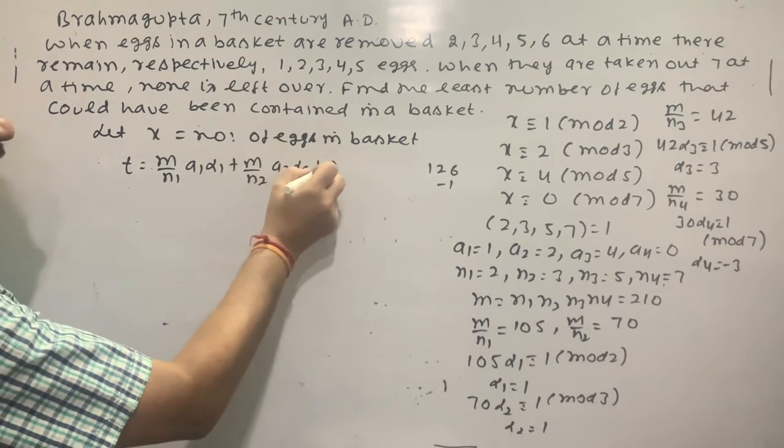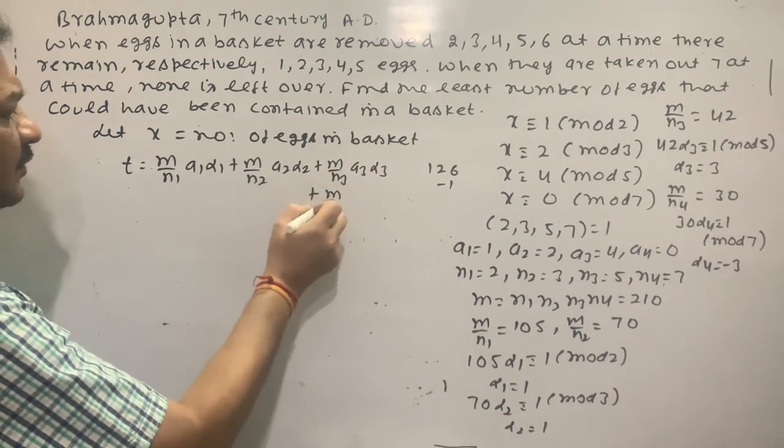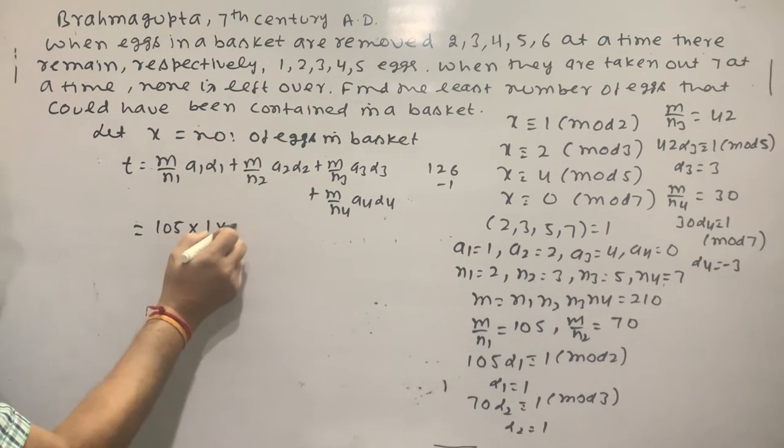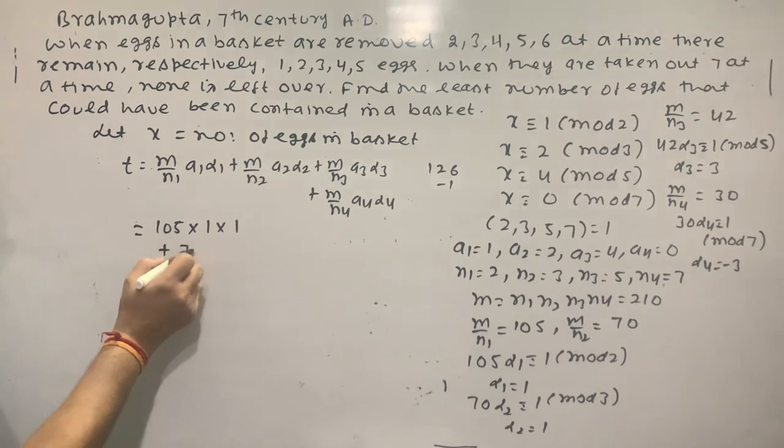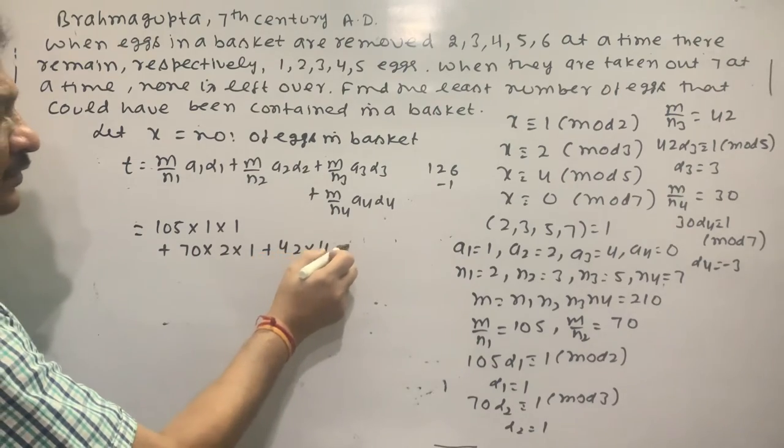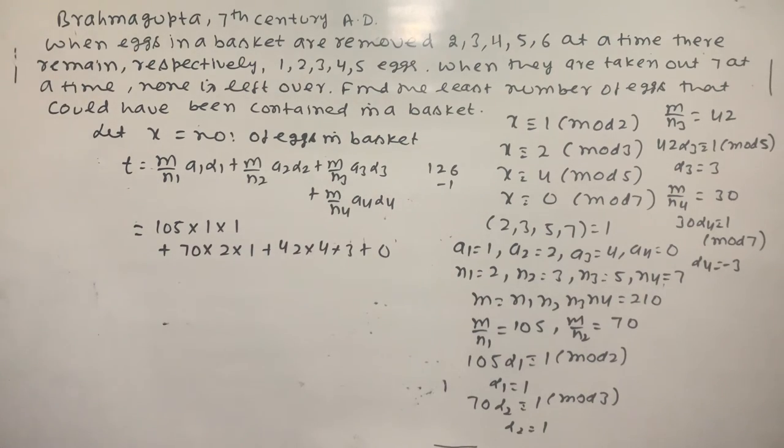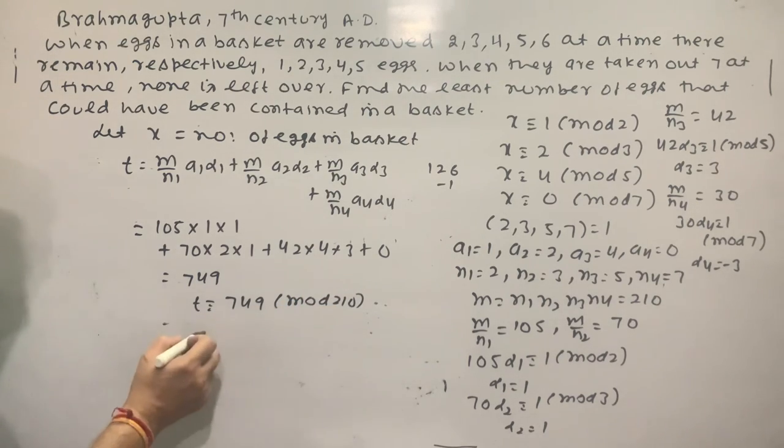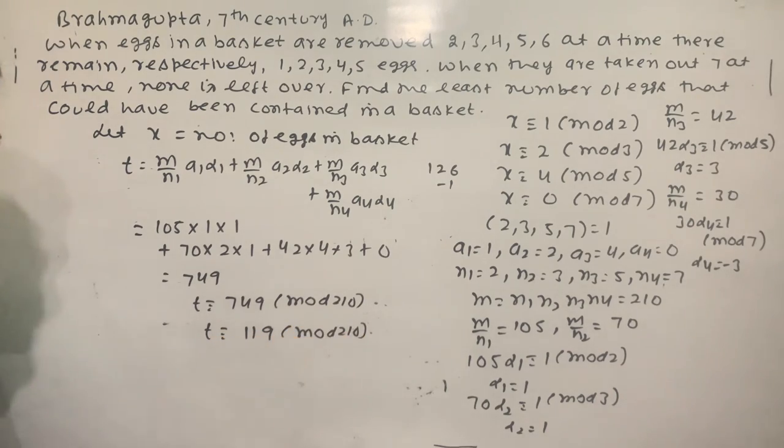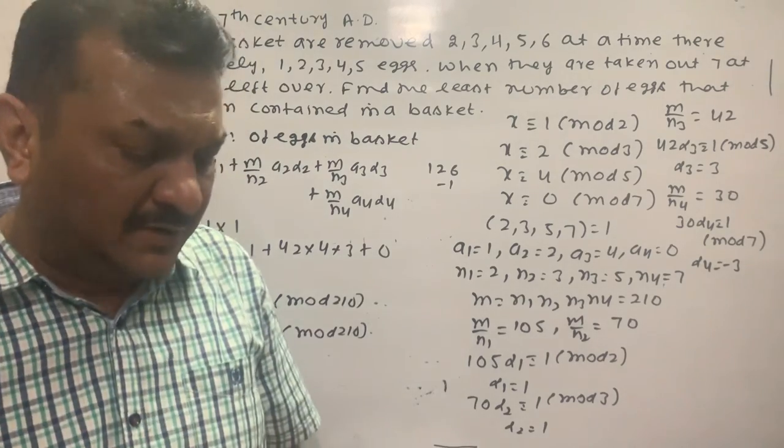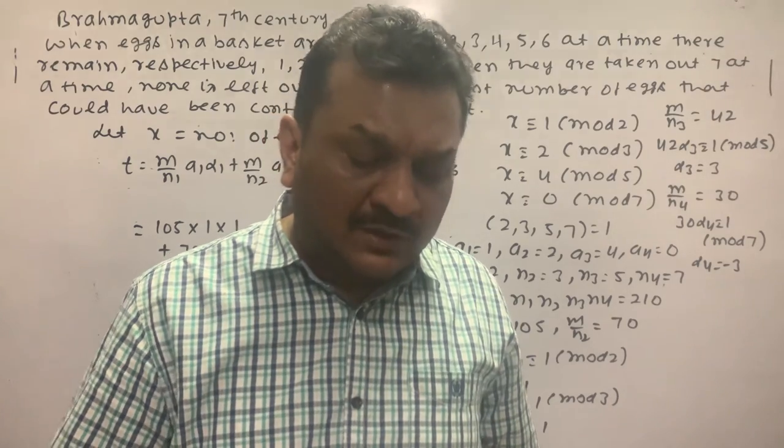So M upon N1 is 105, A1 is 1, alpha1 is 1, plus M upon N2 is 70 into A2 which is 2, alpha2 is 1, plus M upon N3 is 42, alpha3 is 4 into 3, plus A4 is 0. This value comes to 749. So x ≡ 749 (mod 210). Dividing, x ≡ 119 (mod 210). So least number of eggs is 119. Next video, I will discuss one or two more important examples. Thank you very much.